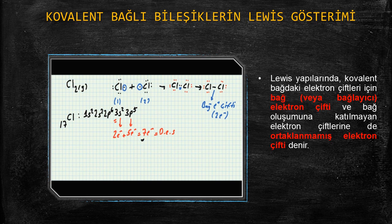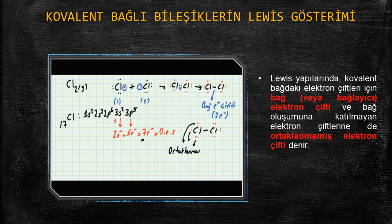Şu kırmızı noktayla gösterilen elektronlar — tekrar yazıyorum — 7 tane noktayı yerleştiriyorum, pardon, 6 tane. Çünkü bir tanesi bağ yapımı için kullanılıyor. İşte bu kırmızı ile gösterilen noktalar, yani elektronlar, ortaklanmamış elektron çiftleridir. Tabi diğer klor atomu için de geçerlidir. O kırmızı noktalar ortaklanmamış elektron çiftidir.